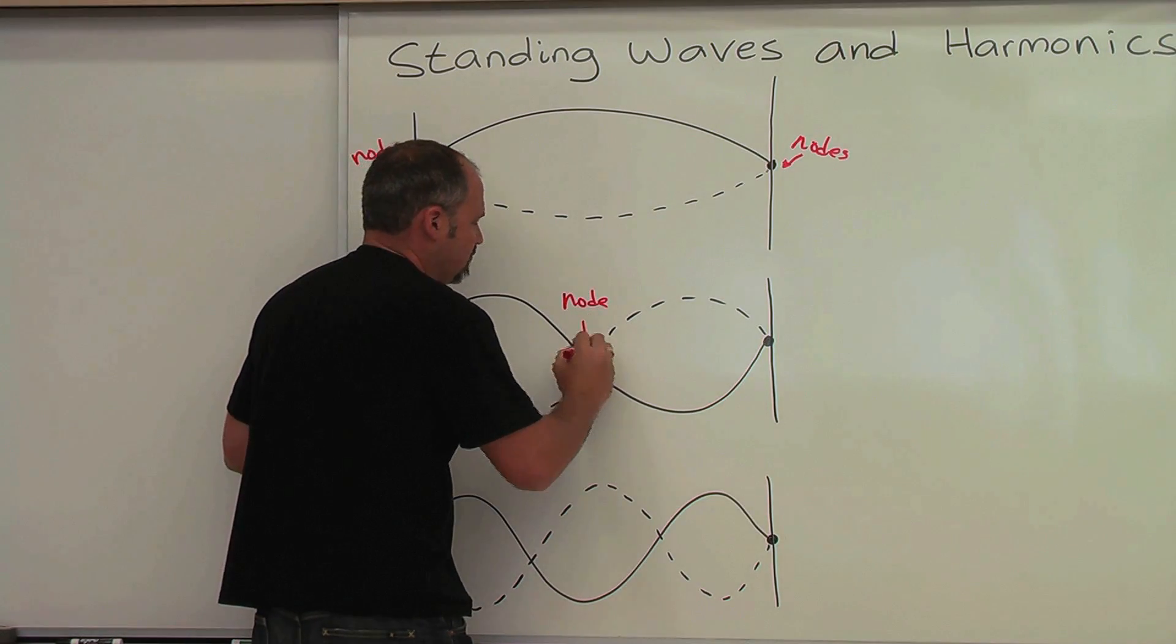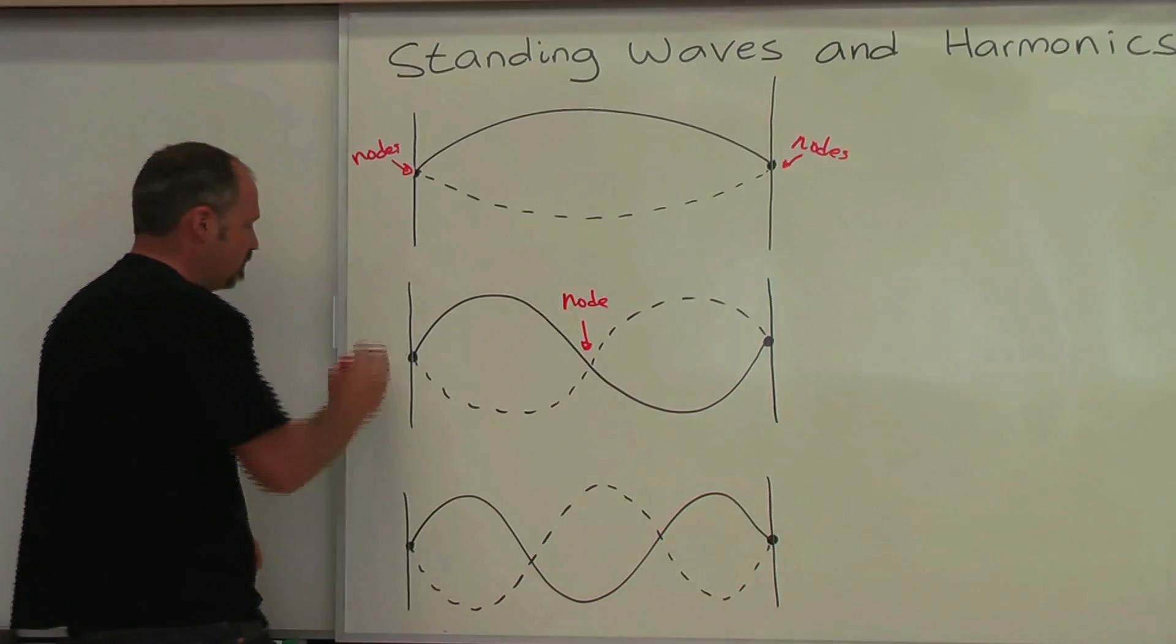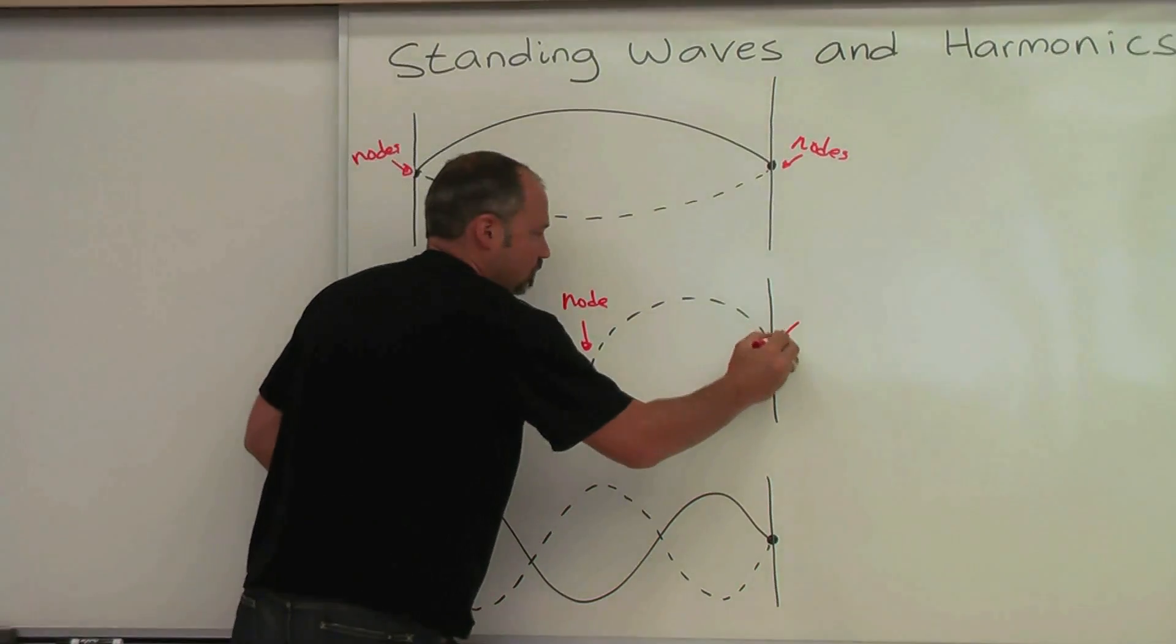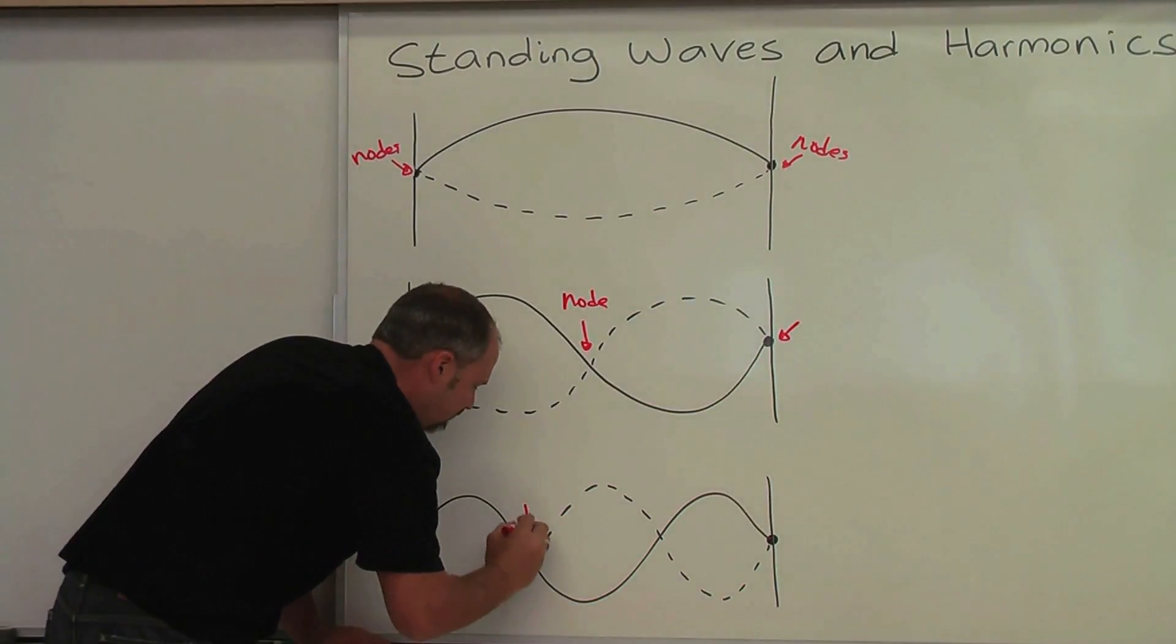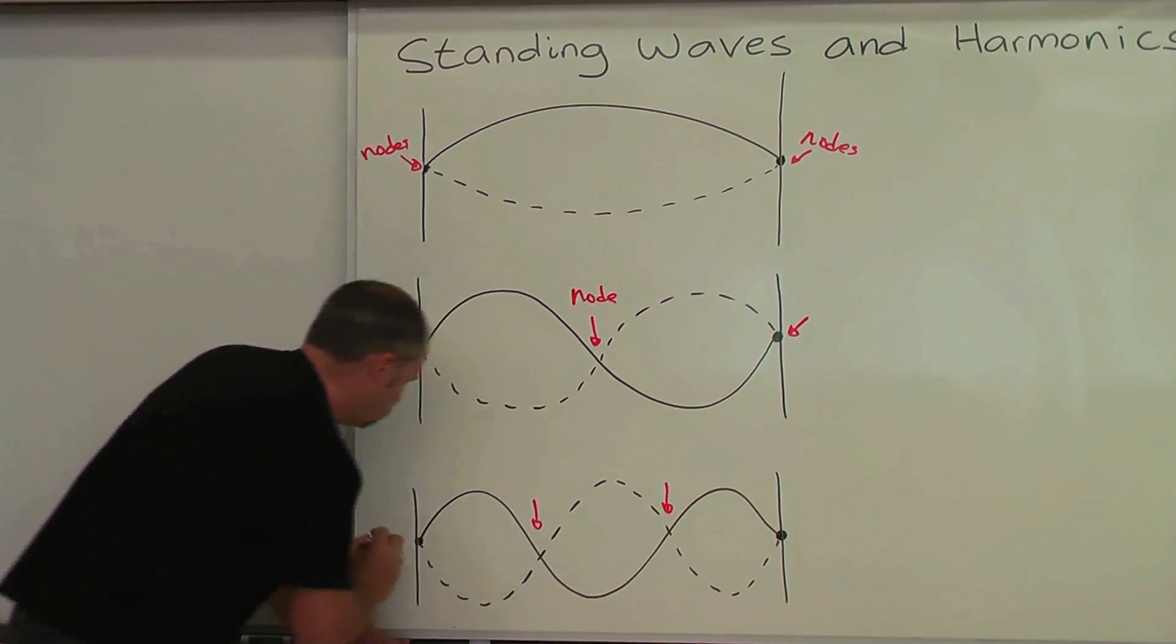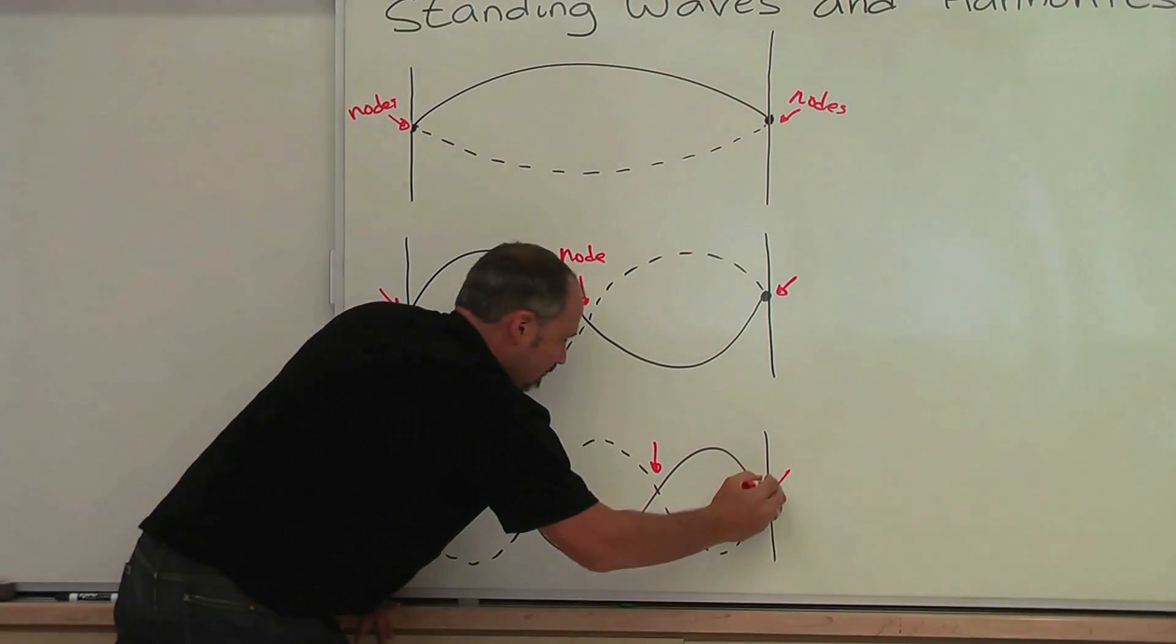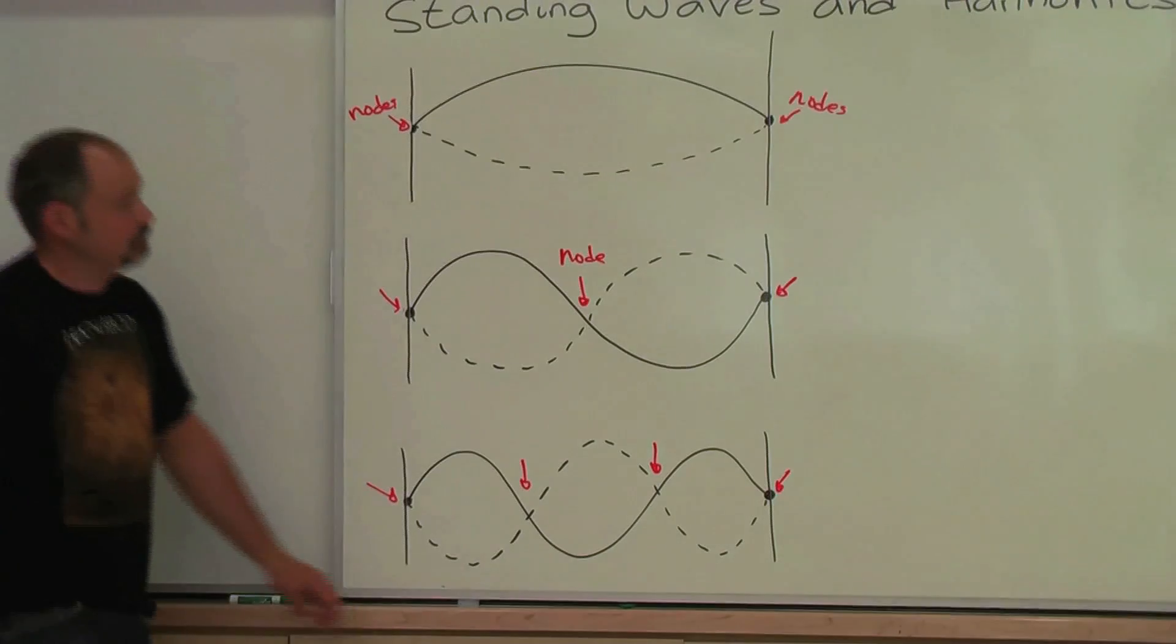This guy down here has an additional node there, plus these two, so a total of three nodes. This guy has two nodes in the middle and two on the ends, so four nodes.